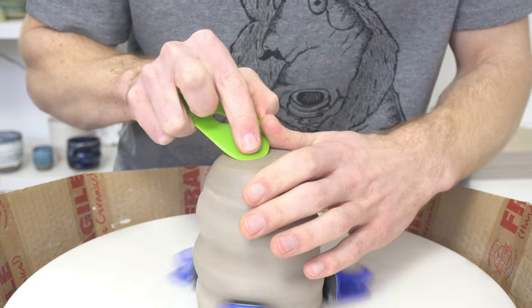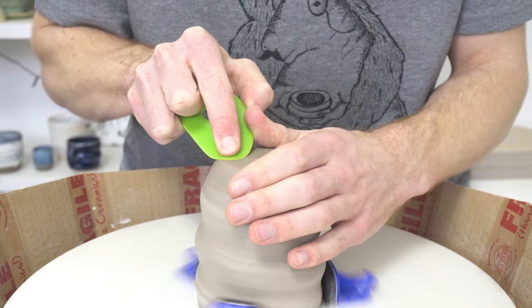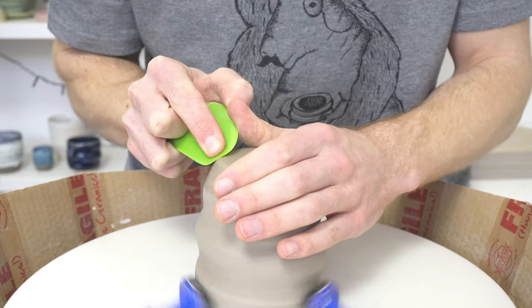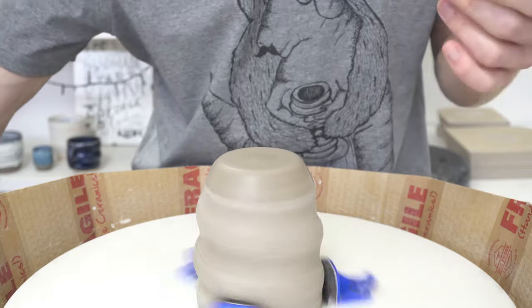What I do is I trim across the bottom. I will then burnish relative. So this is a way of adding a foot without having to trim one in which means that I have to throw one which means I'm not wasting clay.